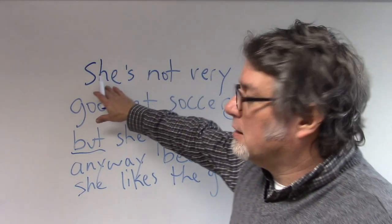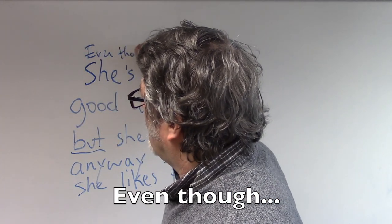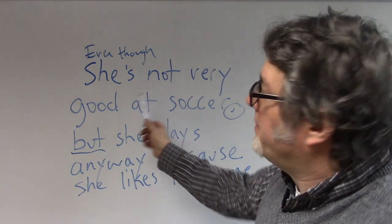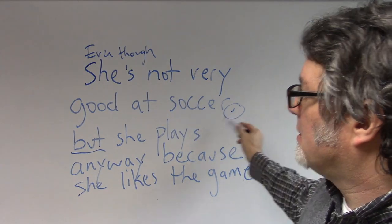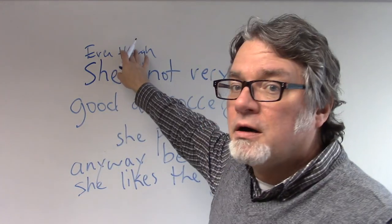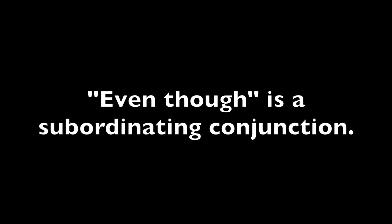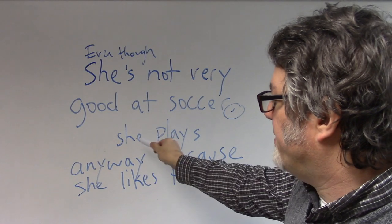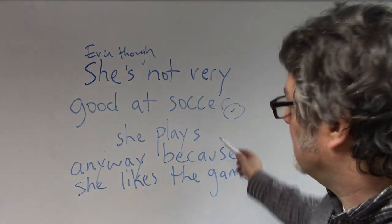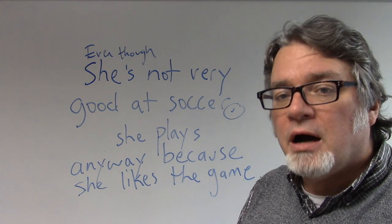Or at the beginning, you can use even though, or although, or though, and then she's not very good at soccer, comma, but then take off this conjunction because you already have a subordinating conjunction here, and then continue. Even though she's not very good at soccer, the comma is here. She plays anyway because she likes the game.